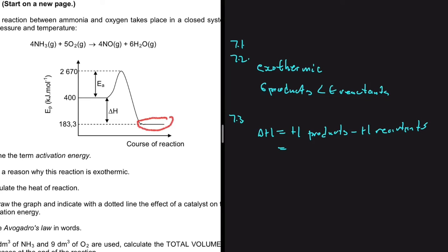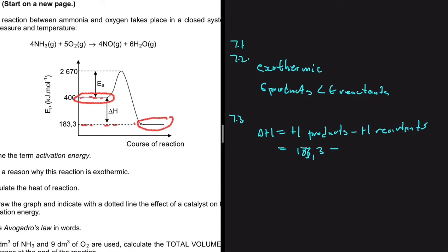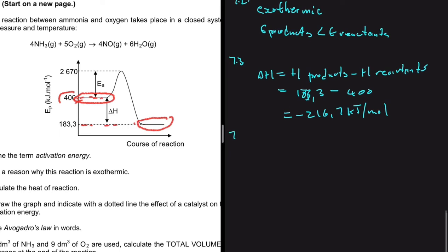From the graph, the energy of the products is 183.3 kJ/mol, so we sub that in. The energy of the reactants is 400 kJ/mol. So ΔH = 183.3 − 400 = −216.7 kJ/mol.